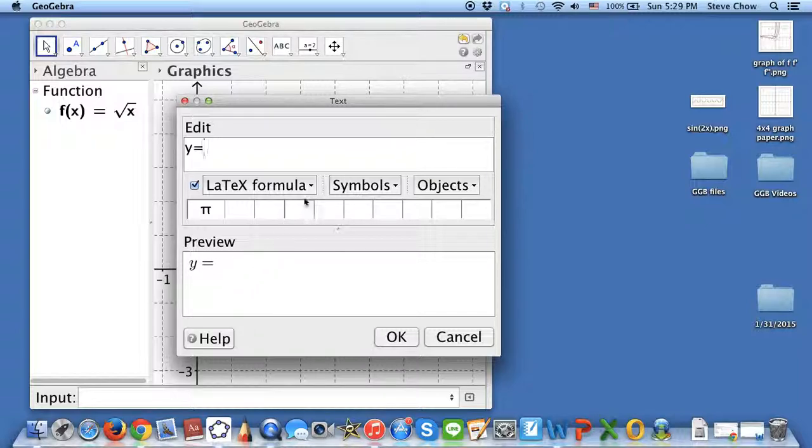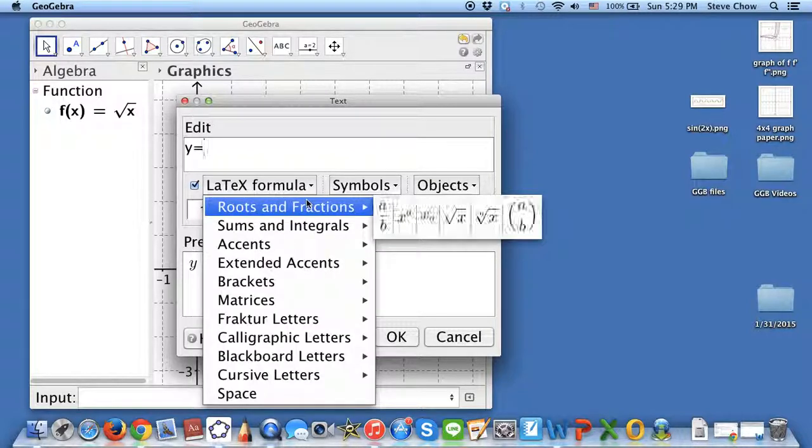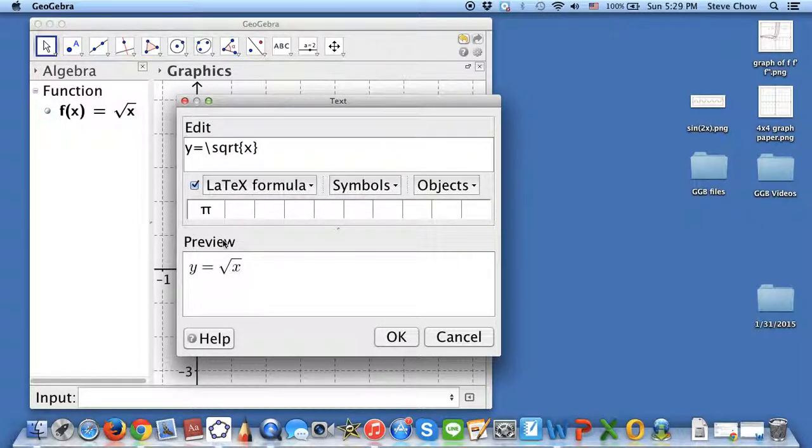So let me erase that. What you want to do is select the formula right here. And we're talking about the roots. So you can choose this one. And just press this. And it gives you square root of x.